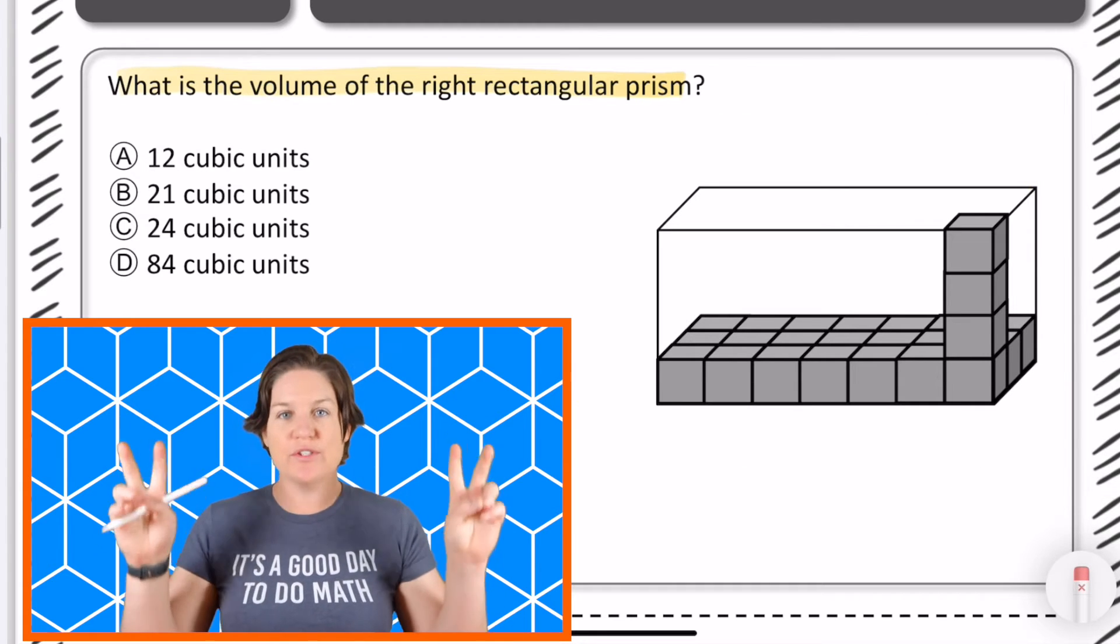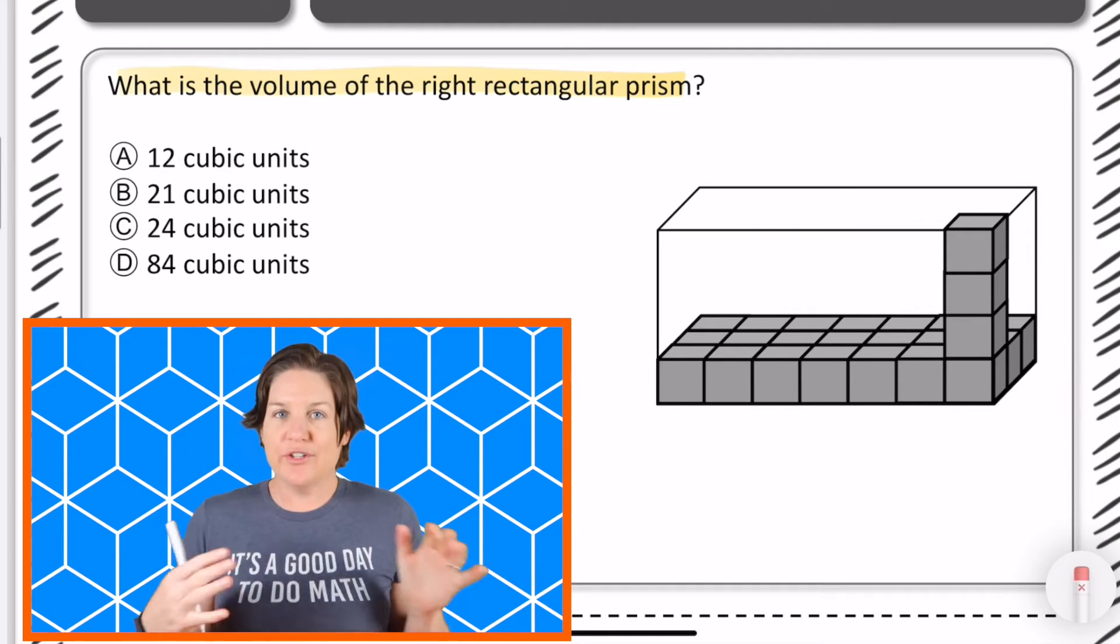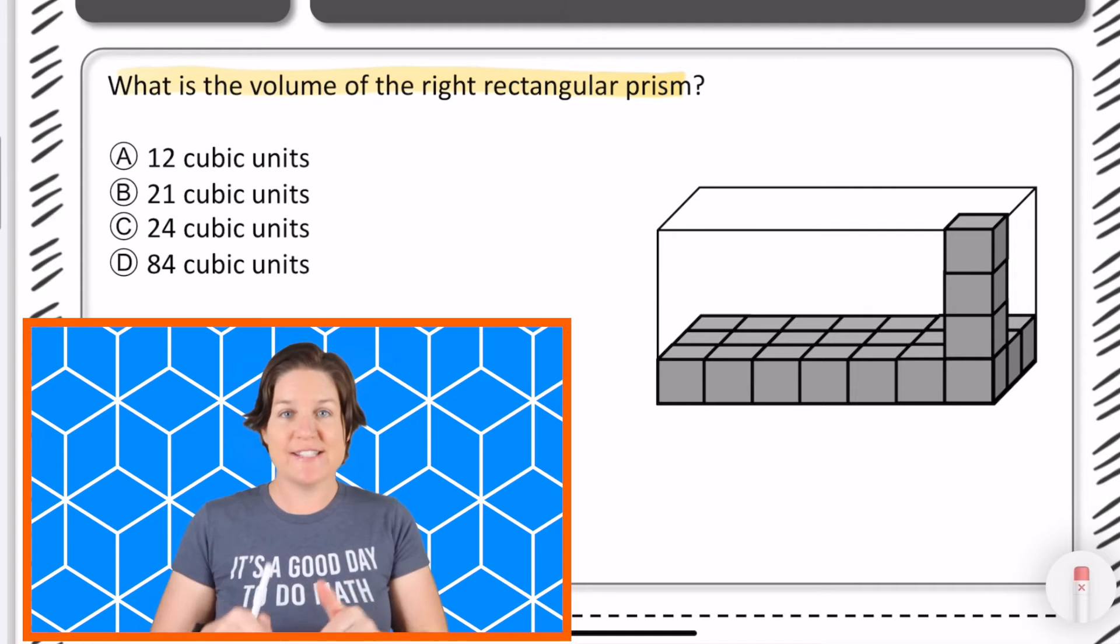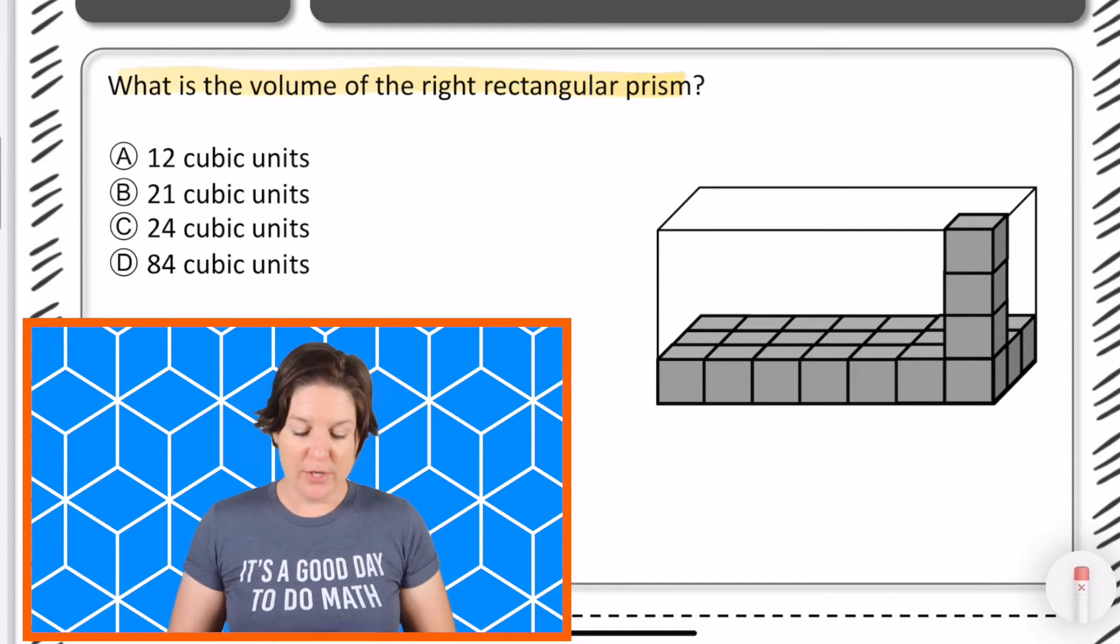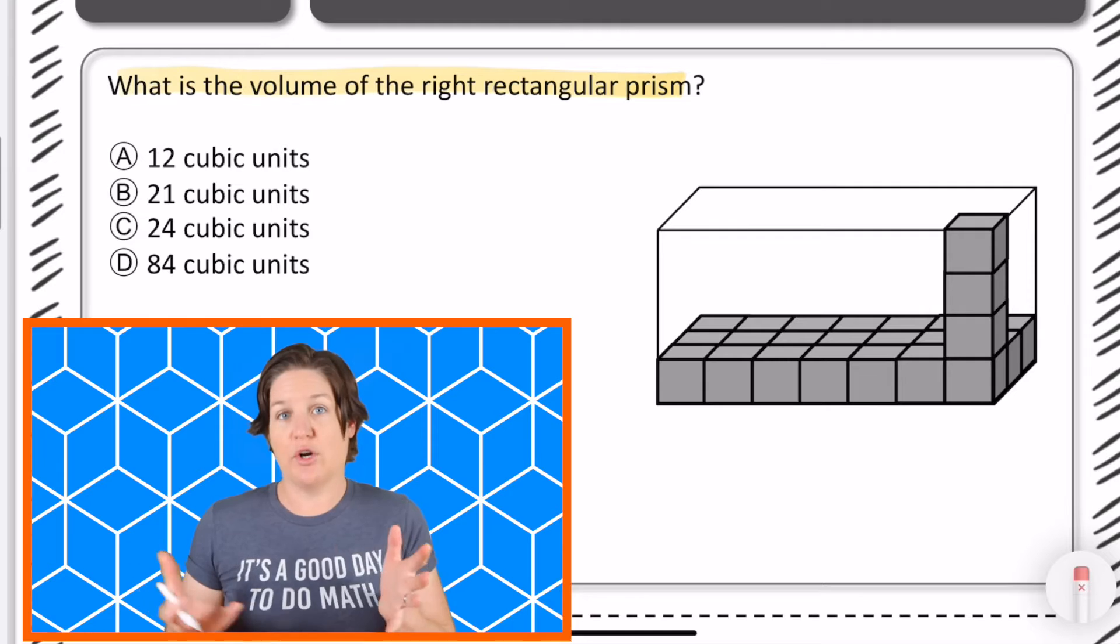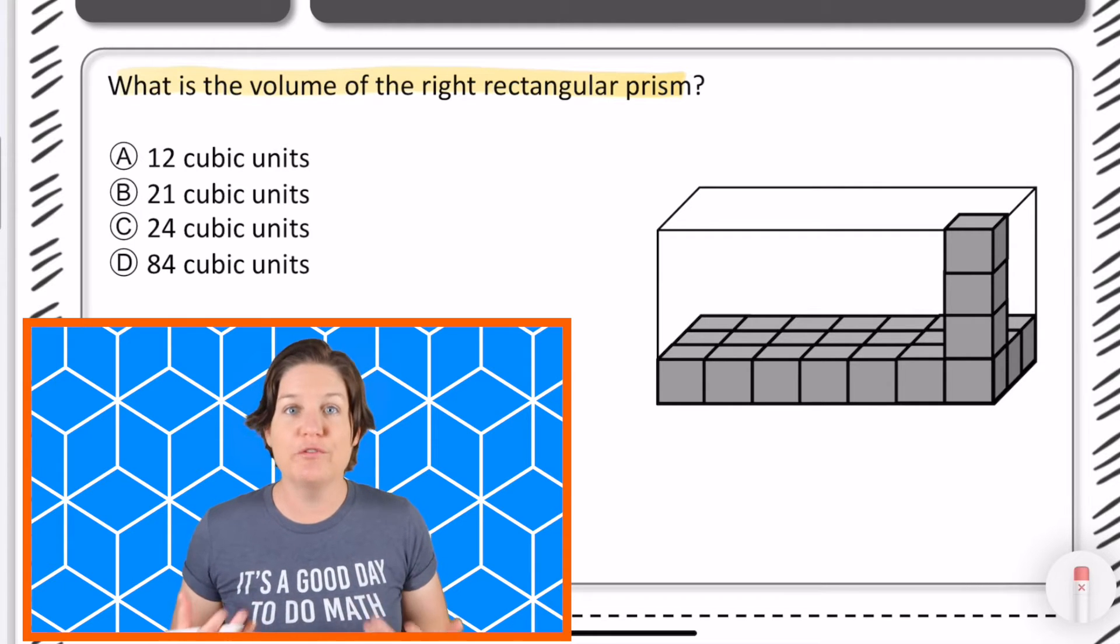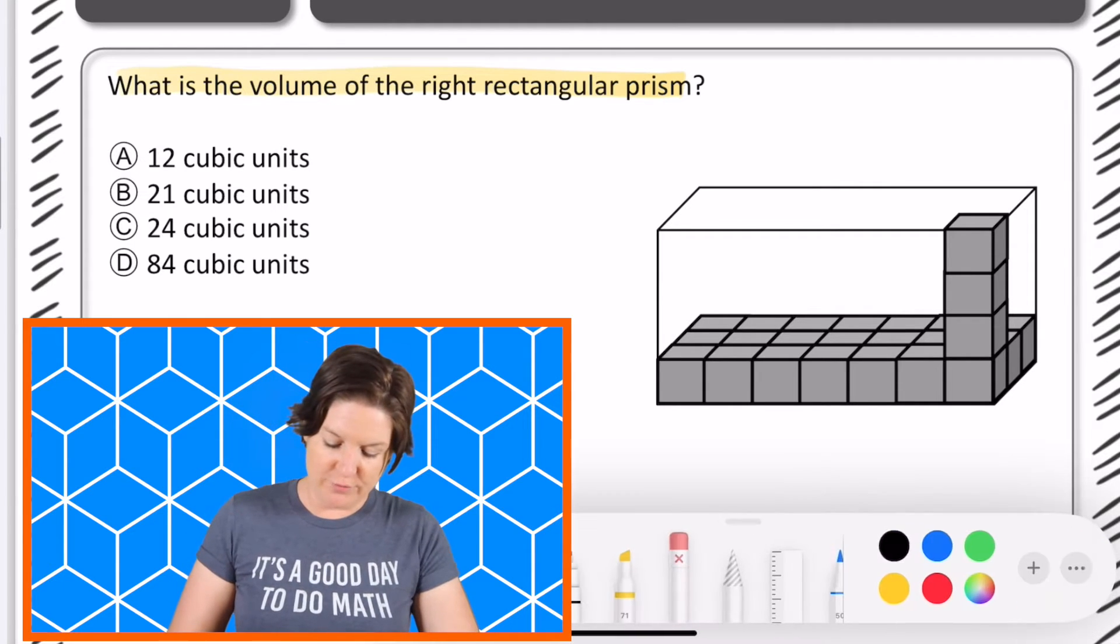So to do this we need to count the cubes. However not all of the cubes are inside of that right rectangular prism. So we need to account for the ones that are there plus the ones that could fit. So let's see what we've got so far.